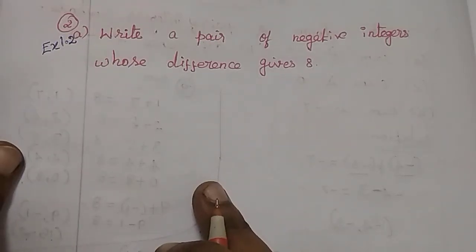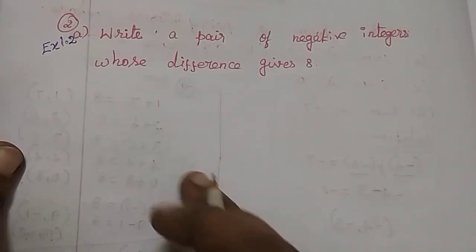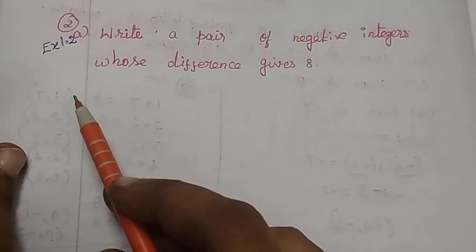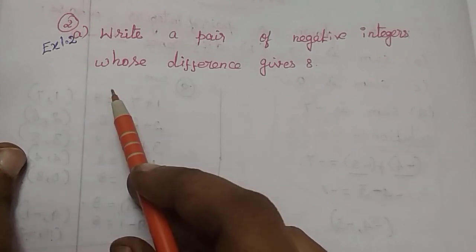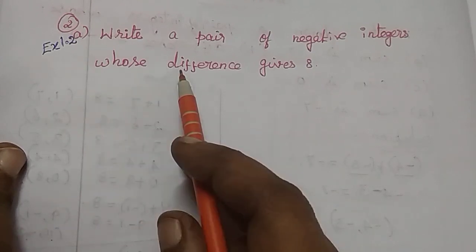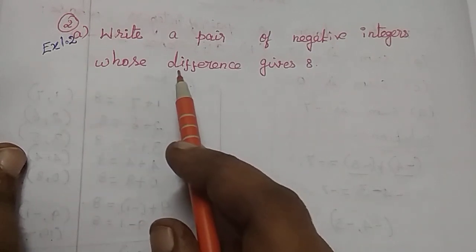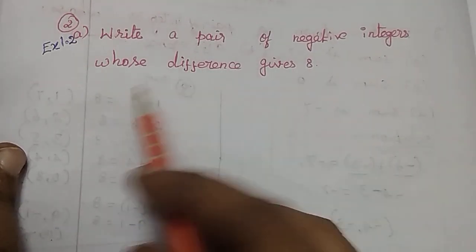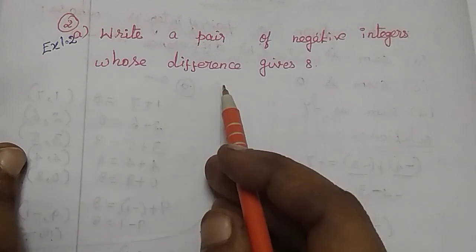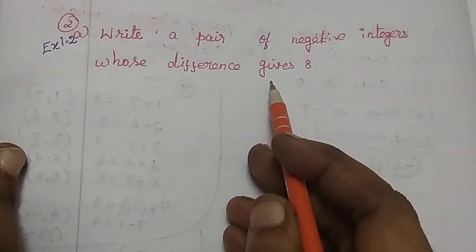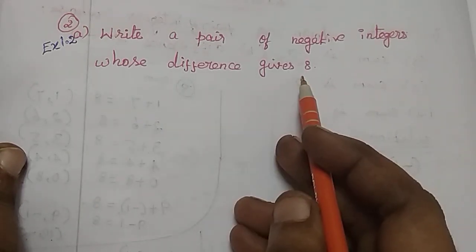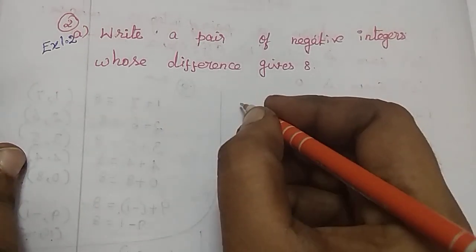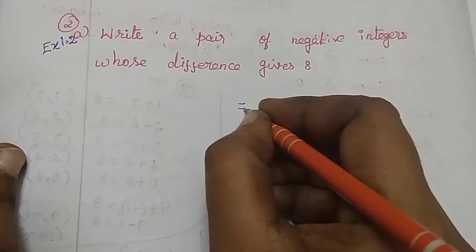Welcome to Maths Academy. Exercise 1.2, The Second Problem. Write a pair of negative integers whose difference gives 8.